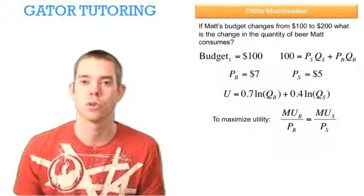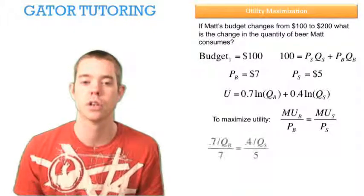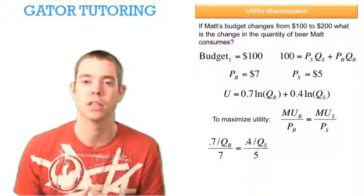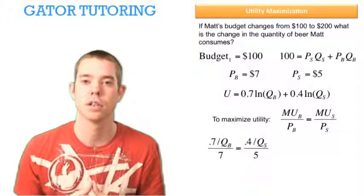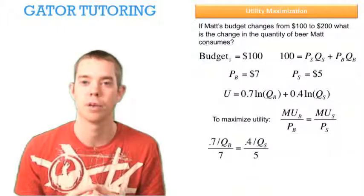So we need to solve for the marginal utility of both beer and sandwiches. That's just the derivative of the utility function with respect to each variable. We find that the marginal utility of beer is 0.7 divided by QB. So we divide that by the price of beer, which is $7.